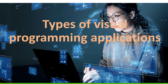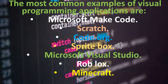Types of Visual Programming Applications. The most common examples of visual programming applications are Microsoft MakeCode, Scratch, Code.org, SpriteBox, Microsoft Visual Studio, Roblox, and Minecraft.